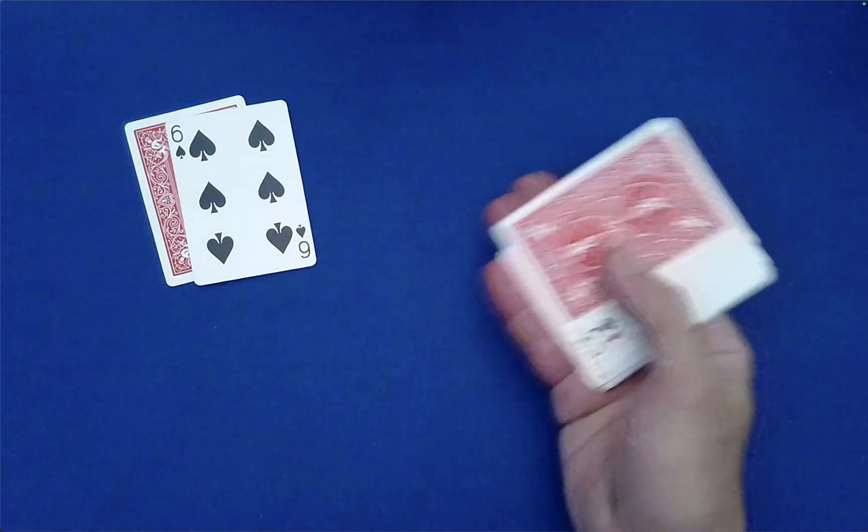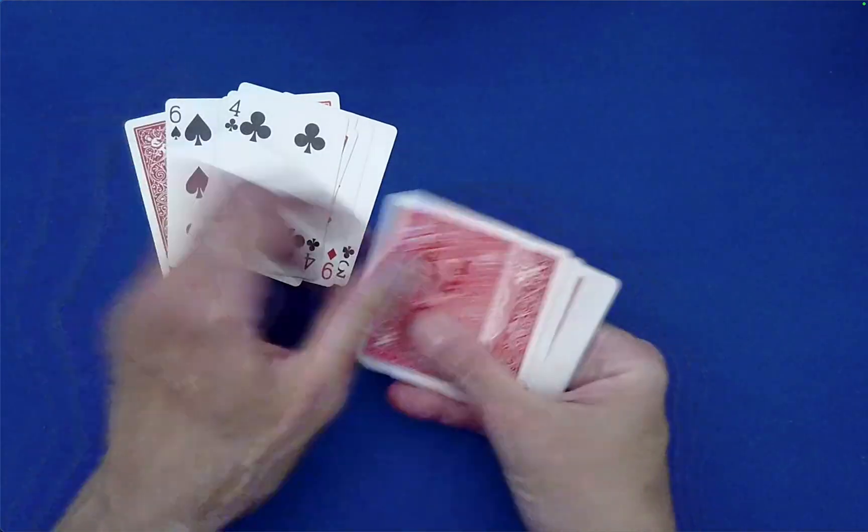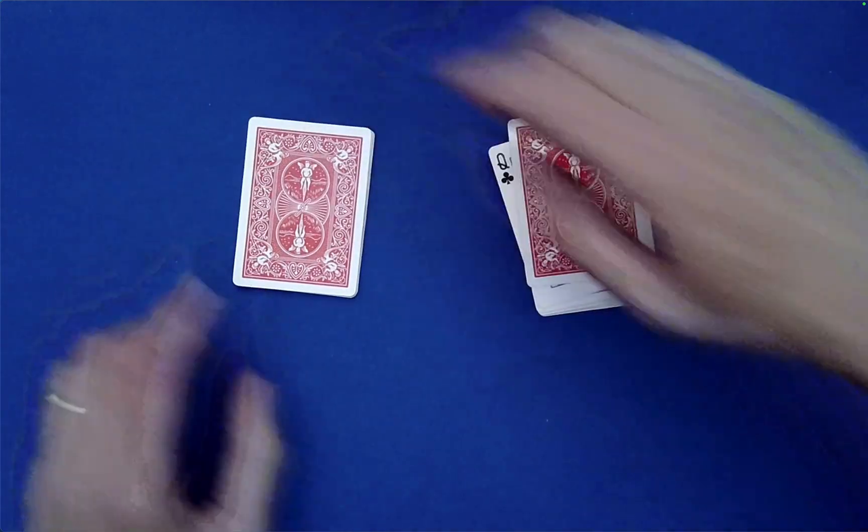So the spectator, let's just say they deal off from the top. So 3, 4, 5, 6. So you didn't see these cards.